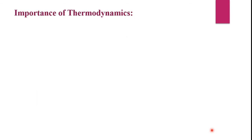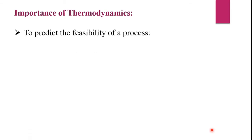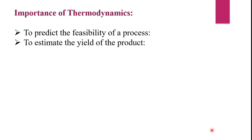Next is the importance of thermodynamics. What is the objective to learn thermodynamics? First, to predict the feasibility of a process — by applying the principles of thermodynamics, we can get information about whether the reaction is going to happen or not. The next one is to estimate the yield of product — how much product is being formed during the process can be deduced by applying the principles of thermodynamics.